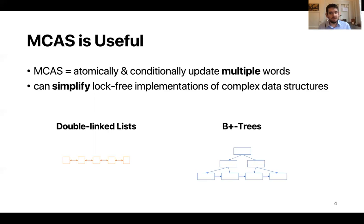Another great example is B-trees. So in a B-tree inserting a new entry can cause a multi-level split and this requires changing several pointers in an atomic way. And as before MCAS has the potential to make this task much simpler.